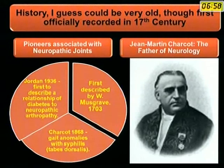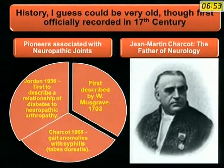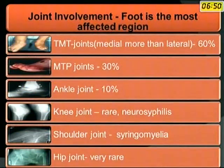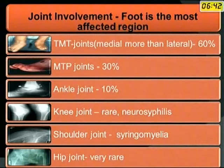The history could be very old, though first officially recorded in the 17th century. The father of neurology, Charcot, is credited with this disease. Joint involvement: foot is the most affected joint — TMT joint 60%, metatarsophalangeal joints 30%, ankle joint 10%. Knee, shoulder and hip are rare.